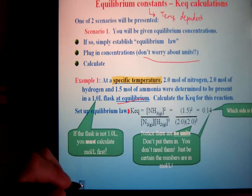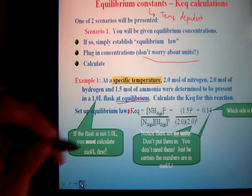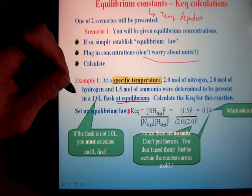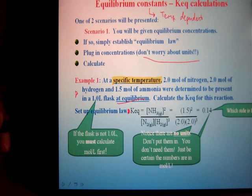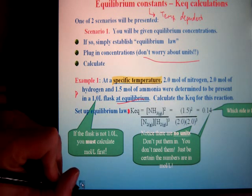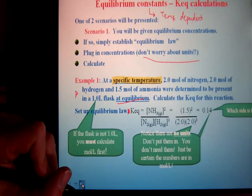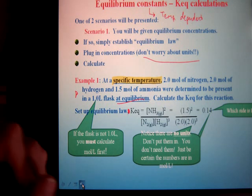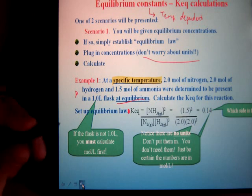So concentration doesn't change equilibrium. Le Chatelier's principle fixes it. Pressure and volume, same thing. Quick change in temperature, instant addition of heat, that won't change it either. But if you do the reaction and keep it at a different temperature, then you get a new K value. Most of our examples are going to be like this, where you're already at equilibrium and you just have to plug in your numbers and solve.